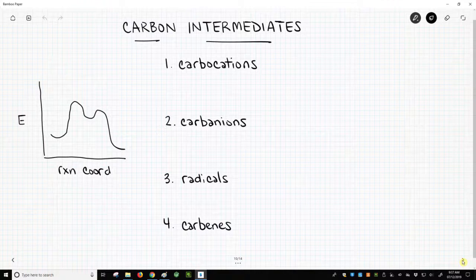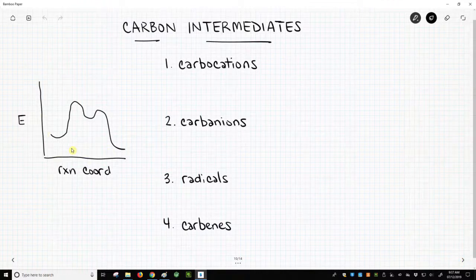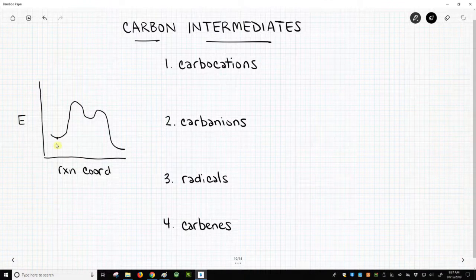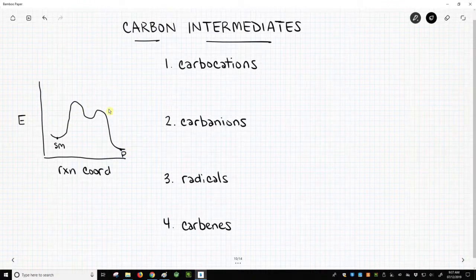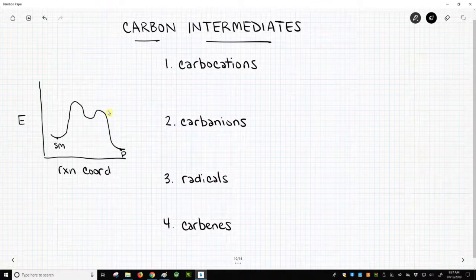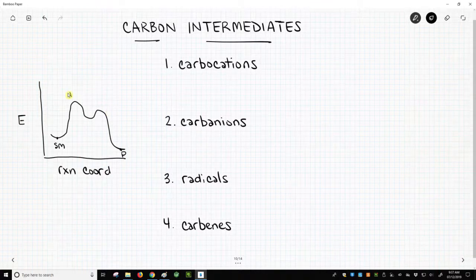Now when we talk about reactions, we see over on the left a reaction coordinate diagram. We have a starting material. The reaction finishes at a product, and this in particular, we've shown we have two humps, two steps in this reaction, two transition states, one transition state for each step.